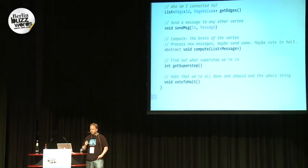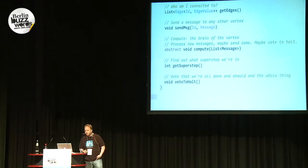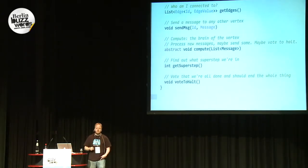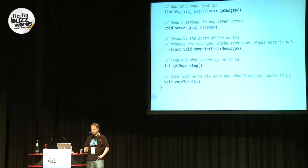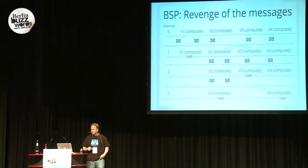To do interesting things you make vertices compute — that's the main method you're going to fill out. It takes in a list of messages you've gotten in that super step. You'll be called every super step and can decide what to do. Two interesting things you can do: find out which super step you're on, and vote to halt. This is how the algorithm ends — once every vertex votes to halt, the computation is finished.